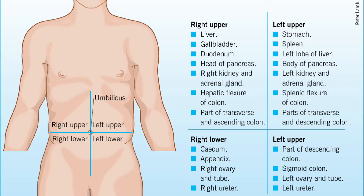The left lower quadrant contains the descending colon, sigmoid colon, gonads, left ureter, and the other half of the bladder.